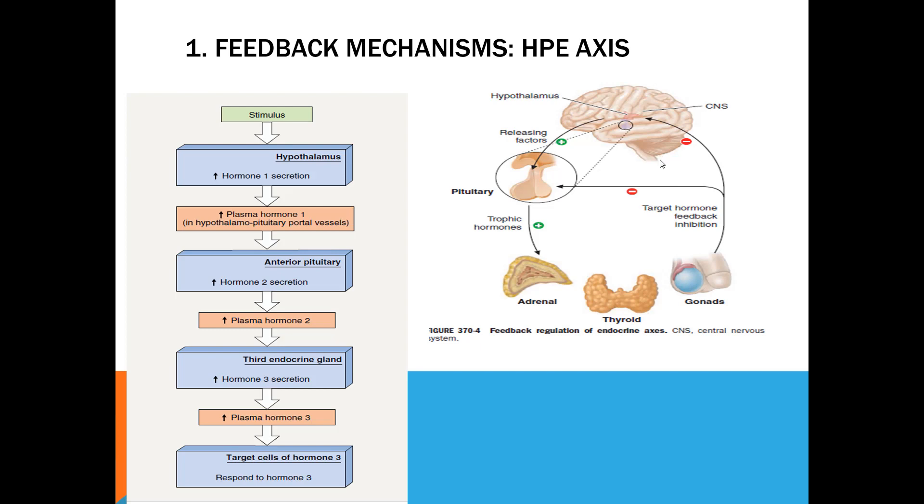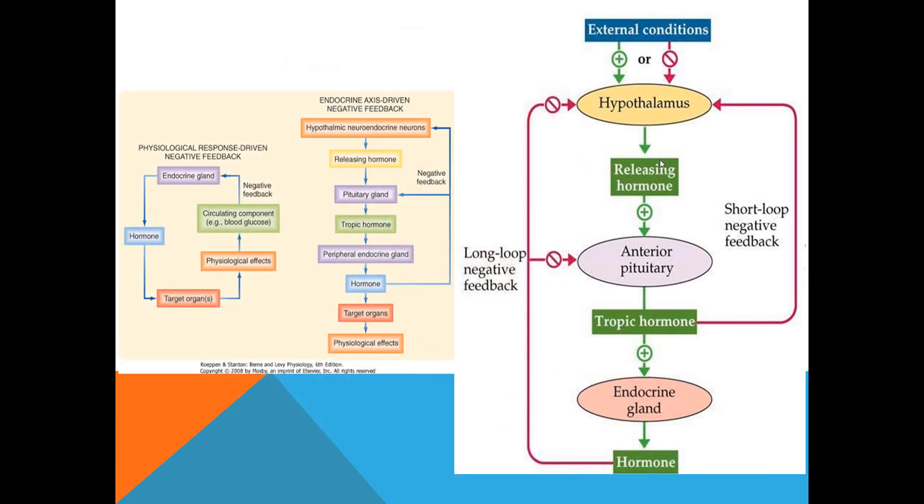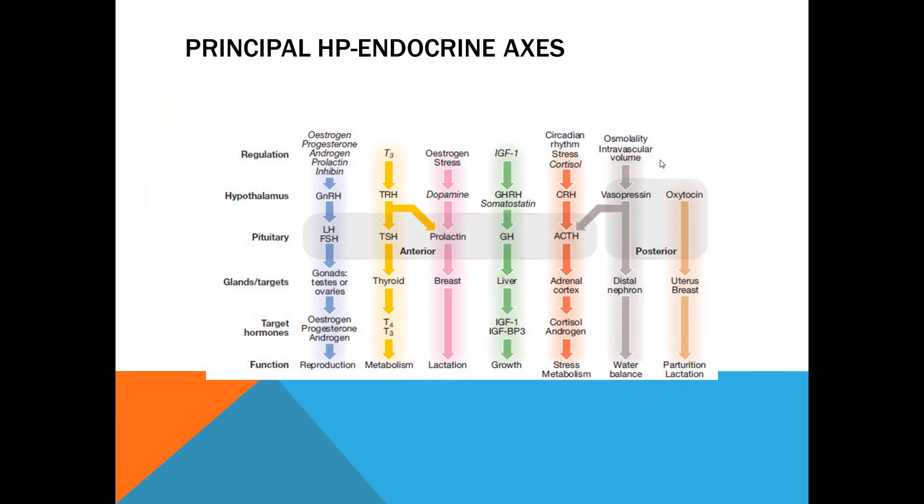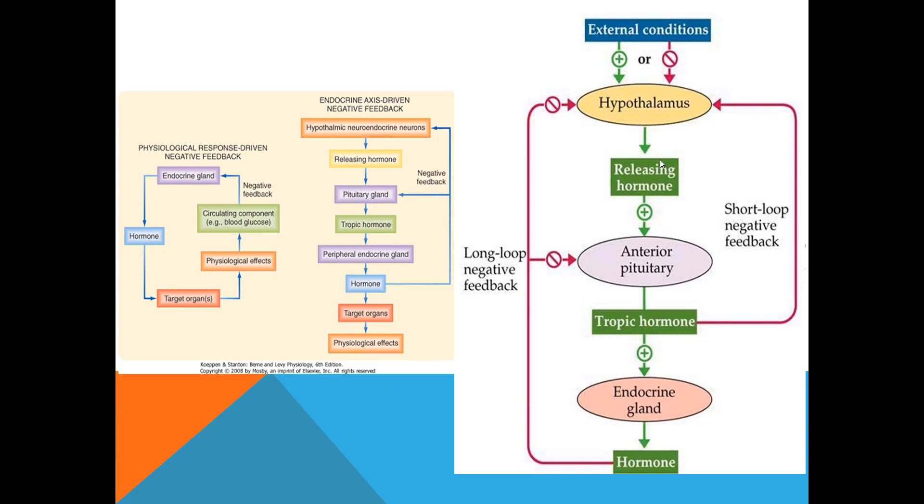These are the feedback mechanisms. You can see stimulus causes hypothalamus to secrete first hormone—we call it releasing hormone. It is carried by blood or by axons to pituitary. There the second hormone will be secreted. Second hormone will act on the endocrine gland. From there, third hormone is secreted and that acts on target cells. This is called hypothalamus-pituitary-endocrine axis. Very important. This axis is involved in every hormone secretion. You can see in the next slide, there are so many axes for metabolism, for lactation, for growth, for water balance, for reproduction. These are our principal hypothalamus-pituitary-endocrine axes.